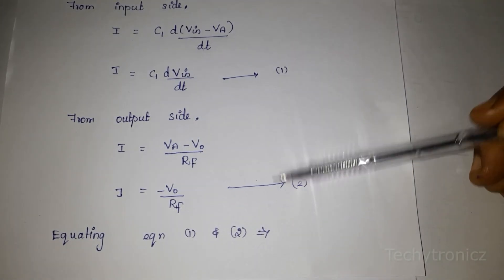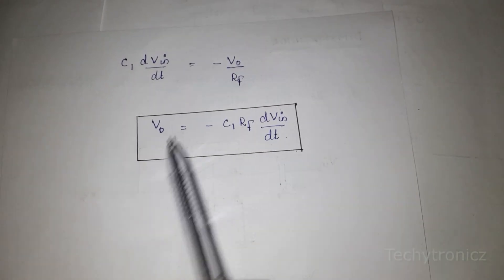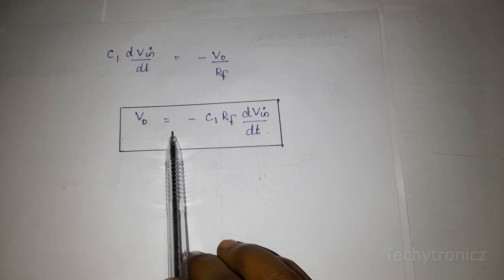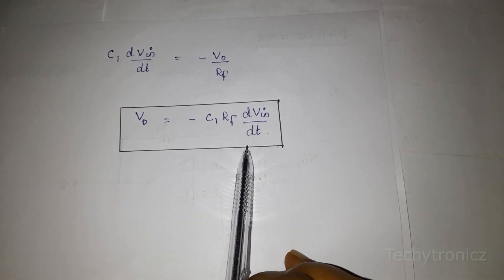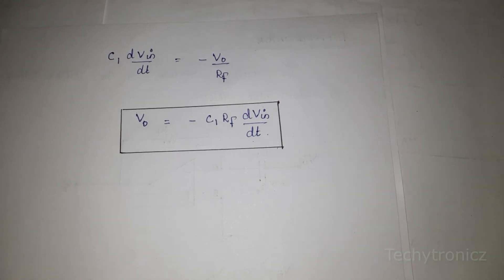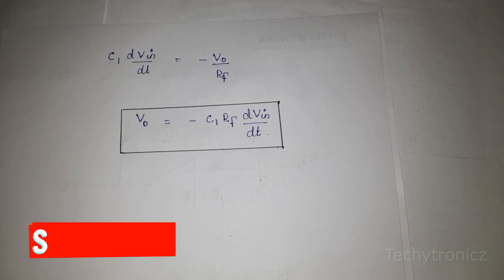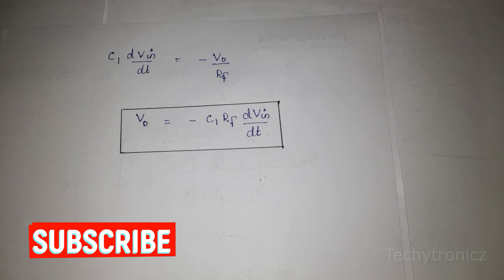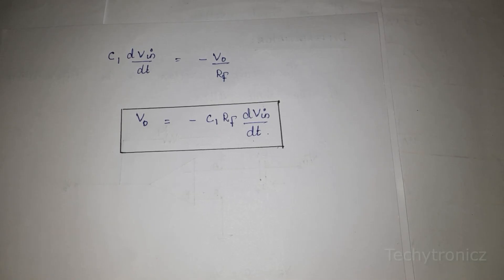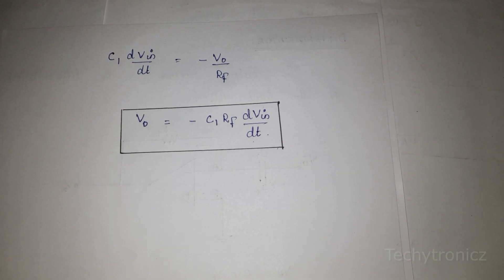We are going to equate these two equations to find the output voltage. Equating gives: V0 equals minus C1 × Rf times dVin divided by dt. This is the output voltage of the differentiator. The equation shows that the output is C1Rf times the differentiation of the input, and the product C1Rf is called the time constant of the differentiator. The negative sign indicates a phase shift of 180 degrees between input and output. The main advantage of such an active differentiator is the small time constant required for differentiation. This is integrator and differentiator.